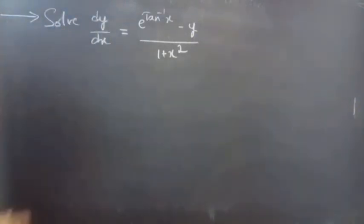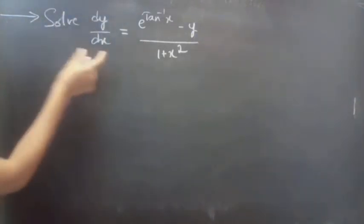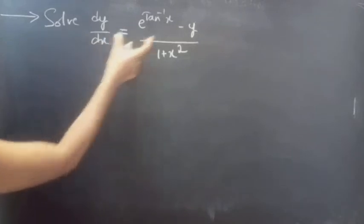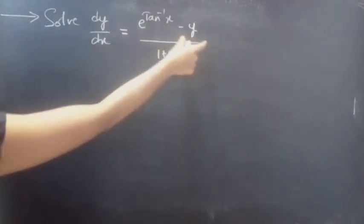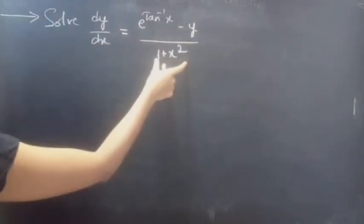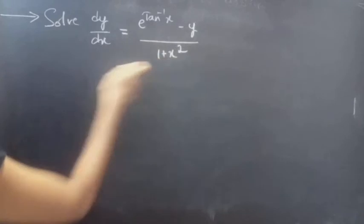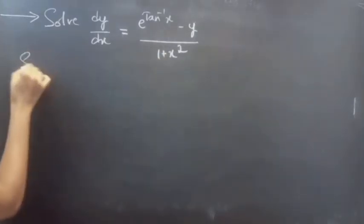Problem: Solve dy/dx equals e^(tan⁻¹x) minus y, all divided by 1 plus x squared.